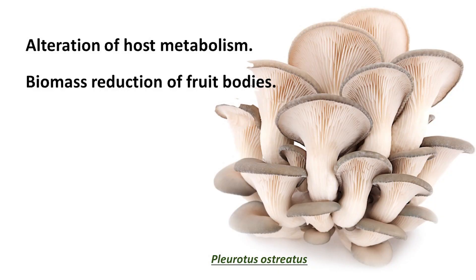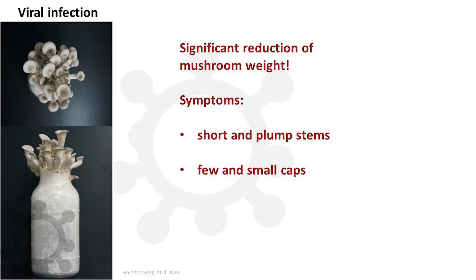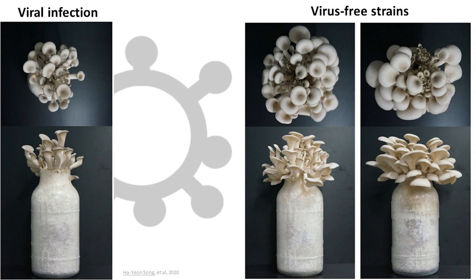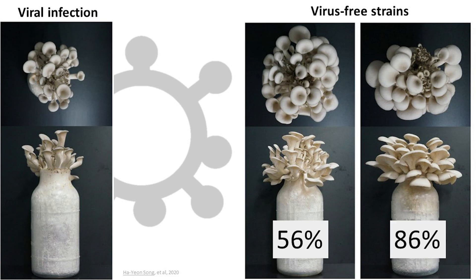Also, mycoviruses may affect fungal biomass production. Pleurotus ostreatus, also known as the oyster mushroom, is a delicious edible fungus and the third most cultivated mushroom in the world. Recently, it was shown that mycoviral infection may reduce the biomass of fruit bodies of this mushroom. Over time, fruit bodies of the mycovirus-infected strain exhibited symptoms such as short and plump stems and few and small caps, compared to two virus-cured strains. The mushroom weights of the two virus-free strains were increased by 56% and almost 86% respectively, compared to the virus-infected strain.